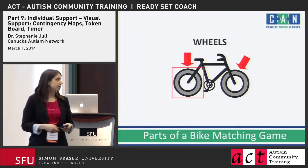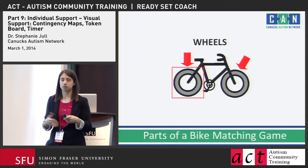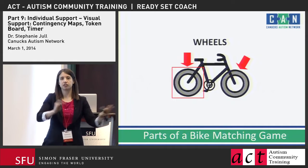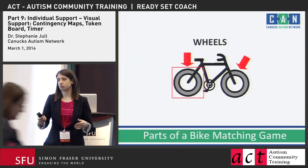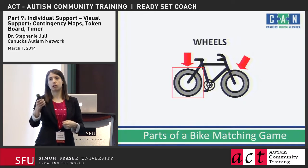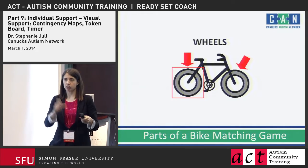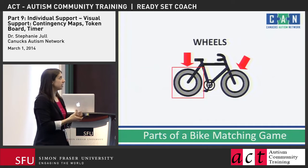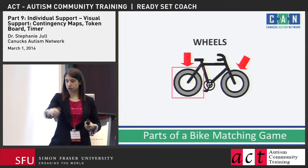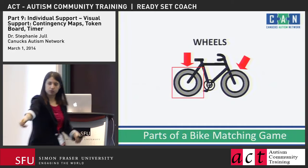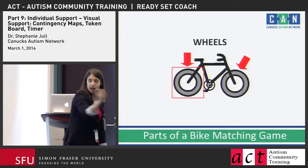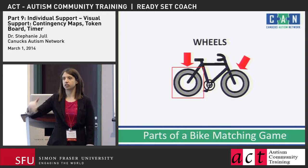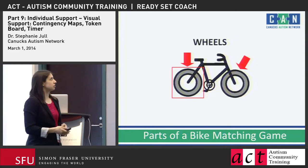We try to adapt activities so that every participant in the program can have an active role. We play a parts of the bike game where kids come up and get to take a turn pointing out a different part of the bike. For some of our kids who may not be verbal, we provide them with a card and make it more like a matching activity — they can come up and match the picture on the card to the actual part on the bike. This is very much like classroom teaching — looking at ways we can adapt activities so that every participant can have an active role.